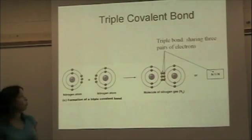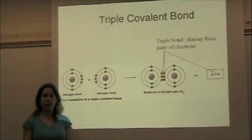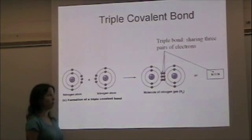You can also form a triple covalent bond. In a triple covalent bond, guess how many electrons we're sharing? Six, or three pairs.